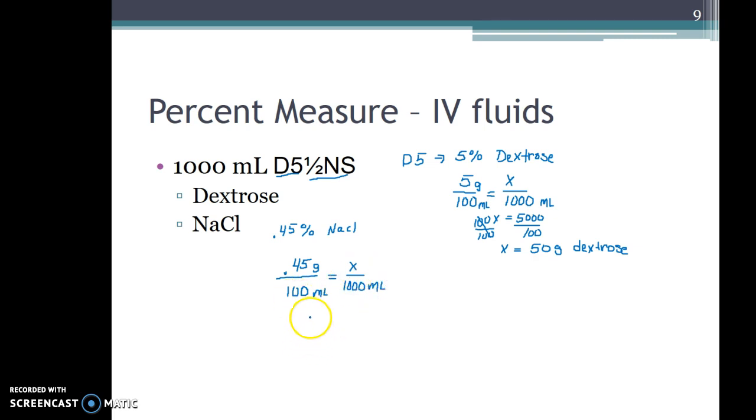So with cross product 100x is equal to 450. Divide both sides by 100 and we get 4.5 grams of sodium chloride.